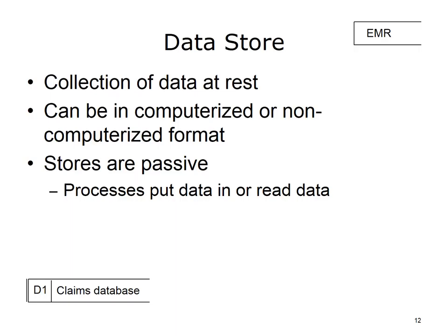The data store is used to model a collection of data at rest. Data stores can be in computerized or non-computerized form, such as paper charts, microfiche, index cards, etc. Stores are passive — processes put data in or read data from them. Like processes, data stores can be given an identifying number, for example D1, D2, etc., where D denotes a data store and the number serves as a unique identifier. Like entities, data stores can be drawn more than once on a diagram to avoid crisscross lines; in this case, a vertical line is added to the closed end of the data store shape.